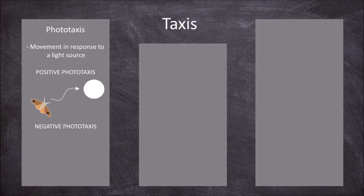Negative phototaxis is the movement away from a light source. An example of negative phototaxis is seen in cockroaches. When exposed to light, they move away from the light stimulus until they return to being back in the dark.